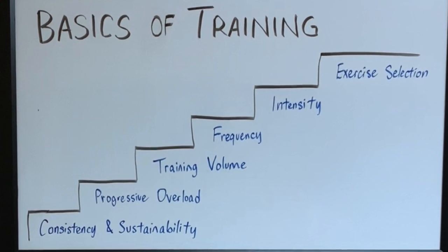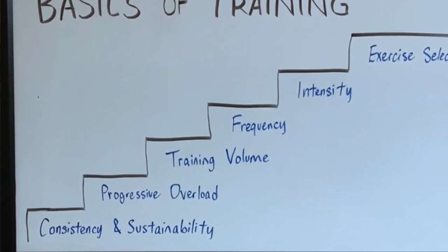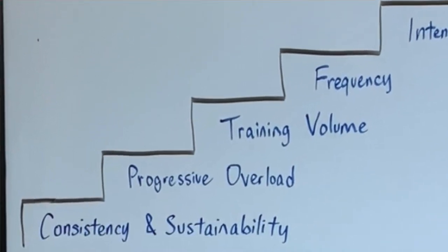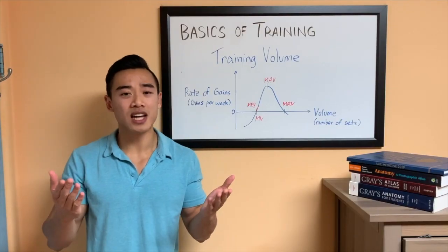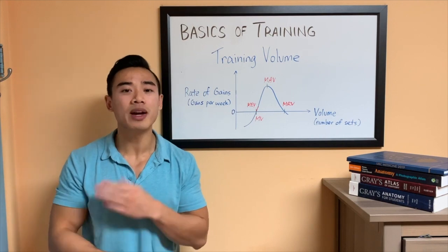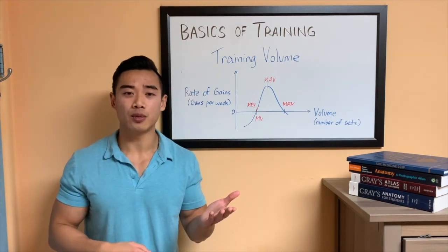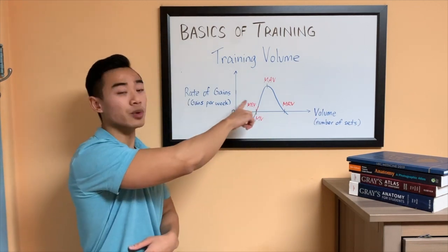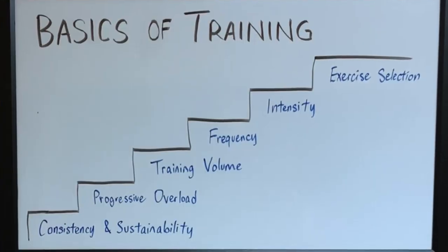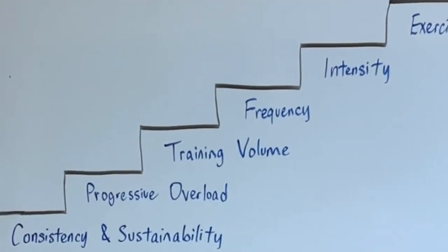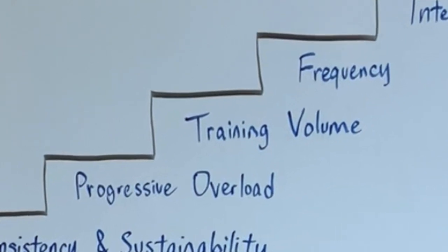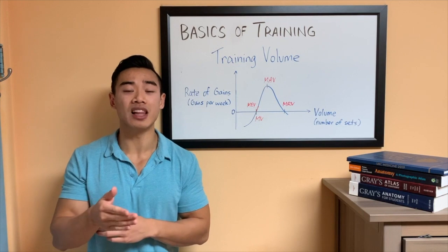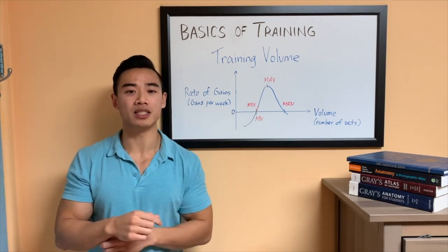Now recall that training volume is the third step in our staircase of training priorities. Sustainability is the first step, and it ultimately dictates how much volume you can do. If you have a lot of time, and you're serious about training, you might want to try doing more volume. On the other hand, if you're really busy and tight on time, you might want to shoot for less volume, maybe something closer to minimum effective volume. Now for our staircase of training priorities, note that progressive overload also ranks higher than volume. What that means is we should be setting our training volume in a way that allows us to maximize progressive overload.